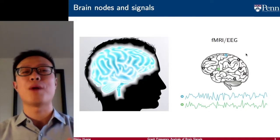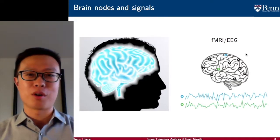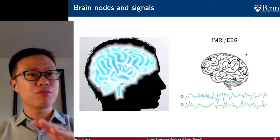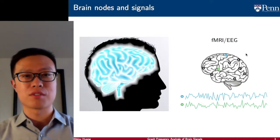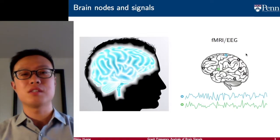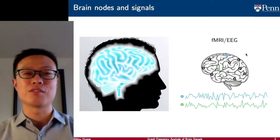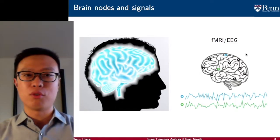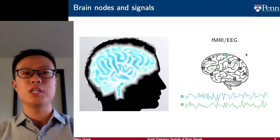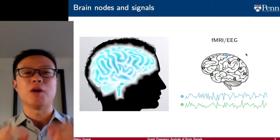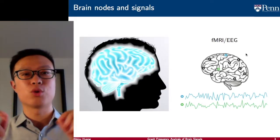Some of you may be confused why the brain is a network, because the brain is just a piece of tissue. If we look at the surface of the tissue, there are lots of gyri and valleys. Within these gyri and valleys, there are brain regions consisting of neurons that have very similar functionalities. Therefore, these brain regions can be considered as nodes. For each of the brain regions, we can use imaging techniques such as functional MRI or EEG, which measures the amount of activity for each of the brain regions.